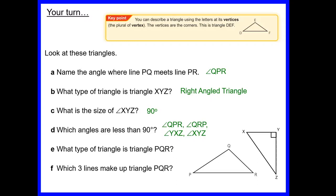Triangle PQR has all sides of different lengths and all angles different, so it's a scalene triangle. The three lines making up triangle PQR are QP, PR, and QR — the letters can be written either way round. Thank you for watching this lesson. Please click the link to move on to the next lesson when you're ready, and don't forget to subscribe.